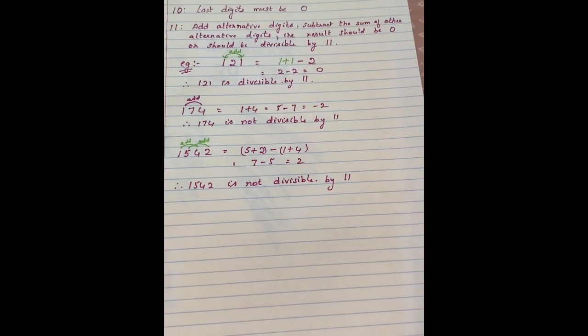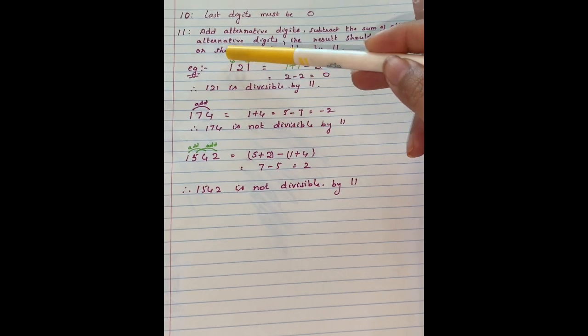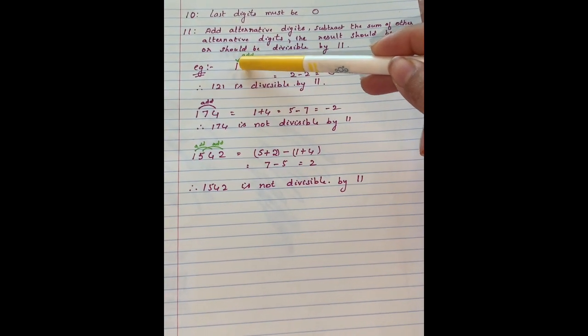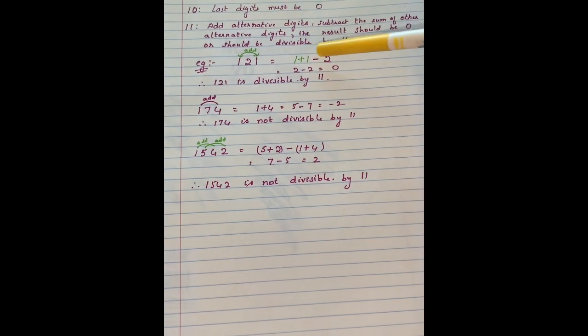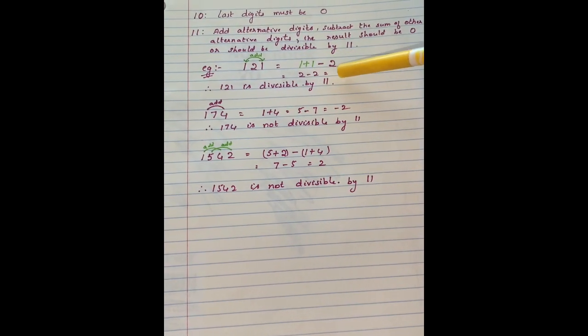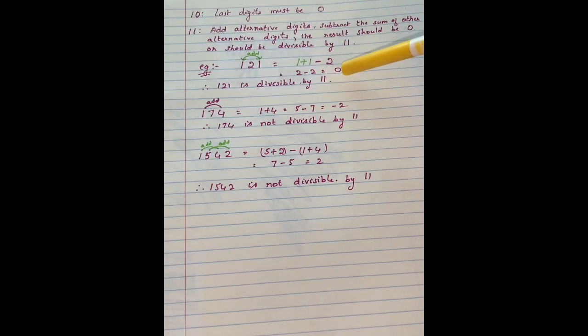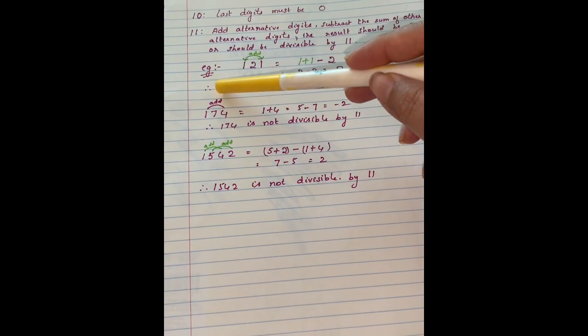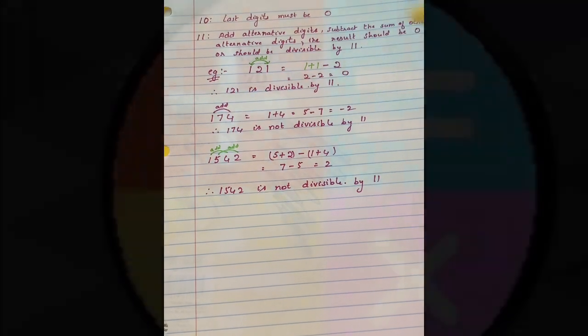For 9, the sum of digits must be divisible by 9. Last digit must be 0 for 10. For 11, add the alternative digits, here in example 1 plus 1, then subtract with sum of middle digits. It is 1 plus 1 minus 2, that is 0. The result should be 0 or divisible by 11.